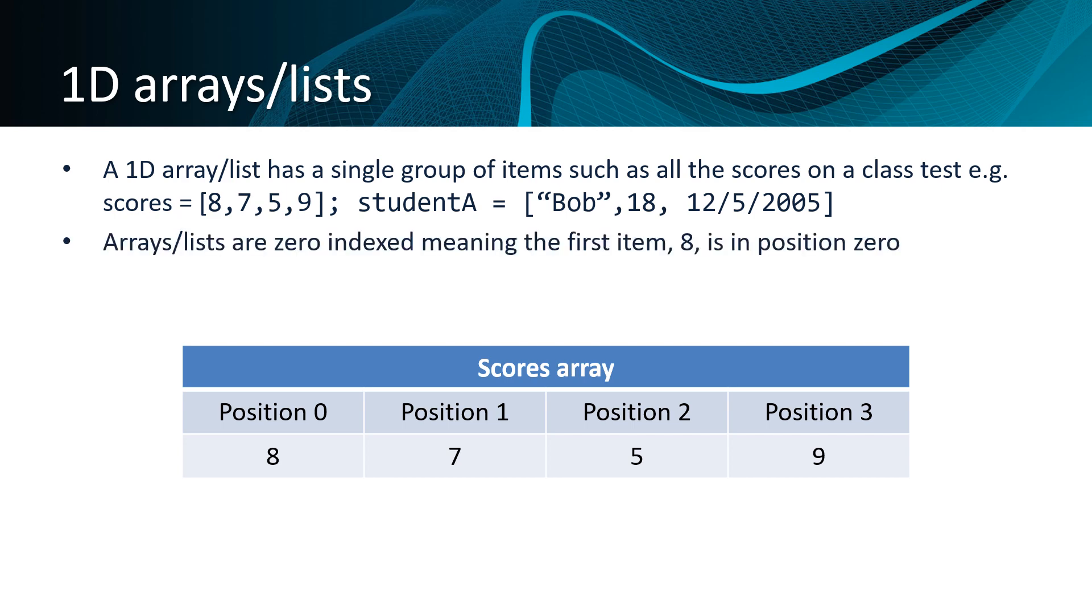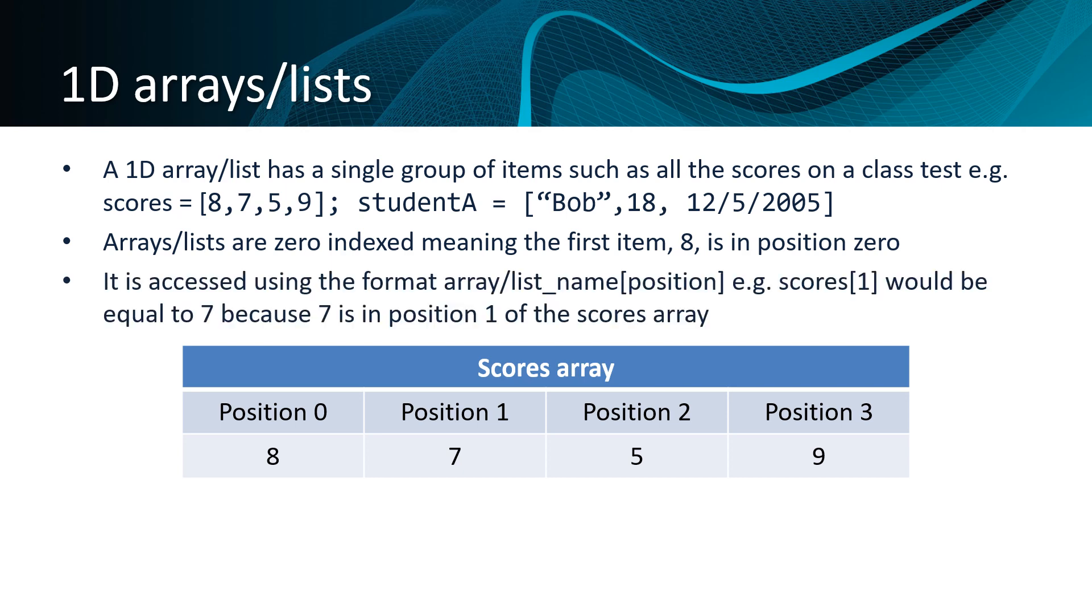Arrays and lists are both zero indexed, meaning the first item, 8, in our scores array is in position 0. It's accessed using the format array or list name, and then in square brackets, the position of the item you want to retrieve. So scores[1] would retrieve the item in position 1 in the array. Remembering it's zero indexed, position 0 has 8, position 1 has 7, position 2 has 5, and position 3 has 9.